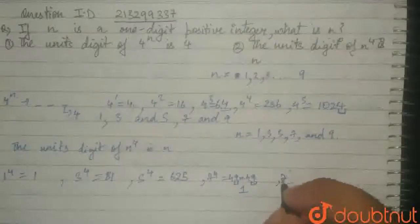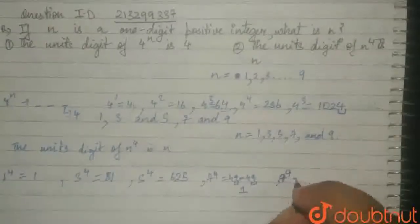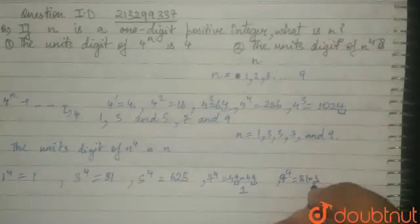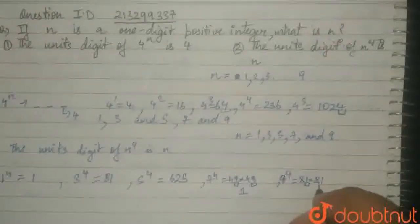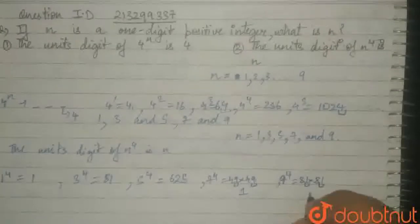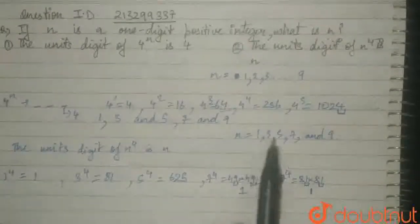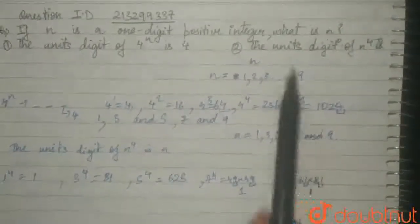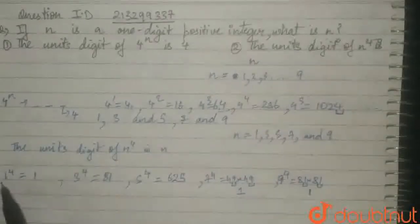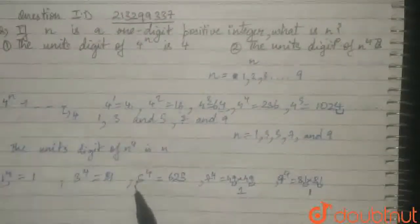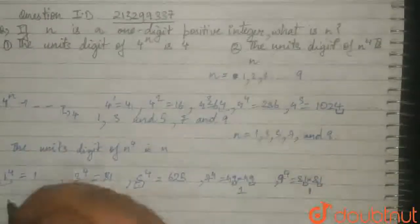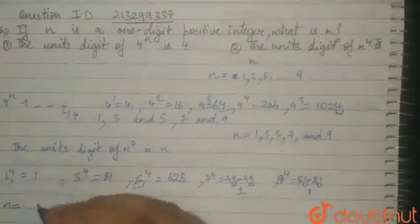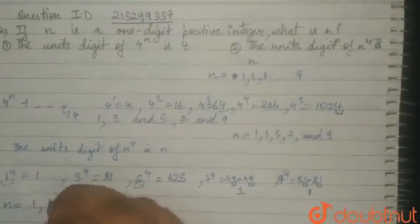9 raised to the power of 4 is 81 into 81. We don't really need to calculate since we only need the unit's digit. 1 into 1 will result in 1. So as we can see from this, and judging by the second equation, only 1 and 5 fit into equation 2. From the second equation, we'll narrow down the values of n into 1 and 5.